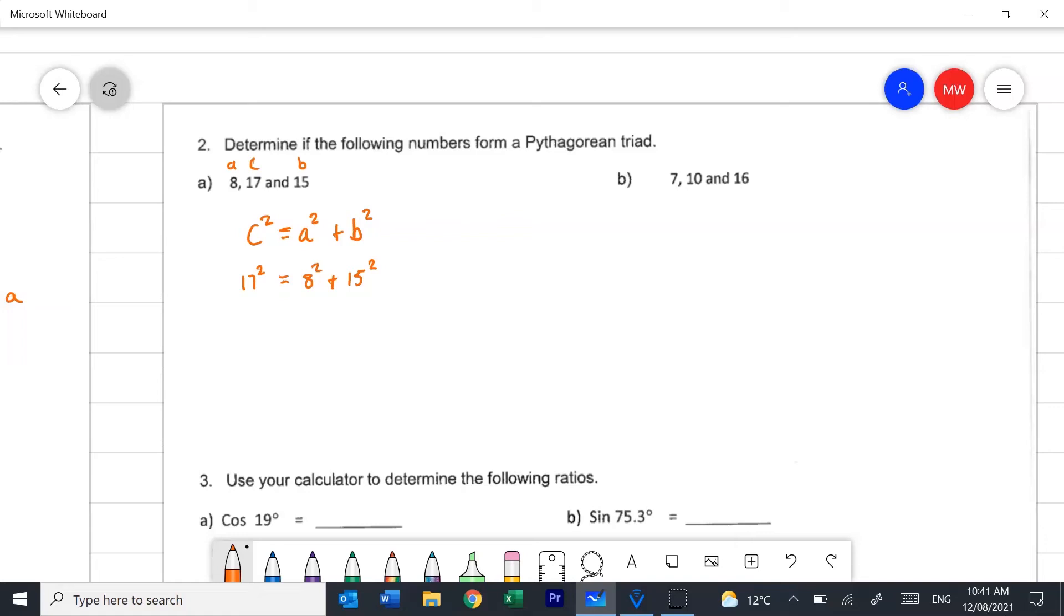And so we'd need a calculator for this they're big numbers, 289 equals 64 plus 225 which means that 289 does equal 289. And because both sides of the equation are equal that makes this a Pythagorean triad or in other words it means that it's a right angle triangle. Now it's a worded question so it is important that you write yes it is. Okay you could go as far to say a Pythagorean triad if you want but just yes it is is fine or even yes is okay.